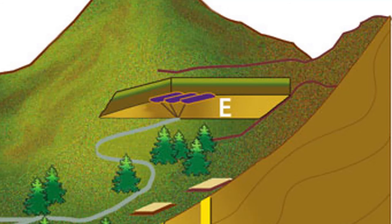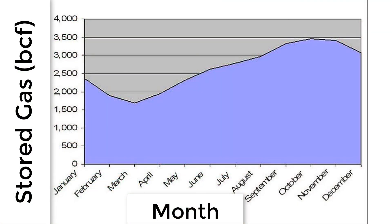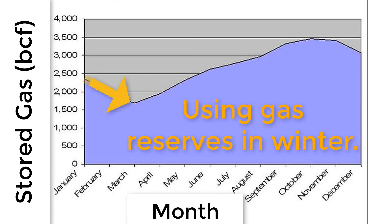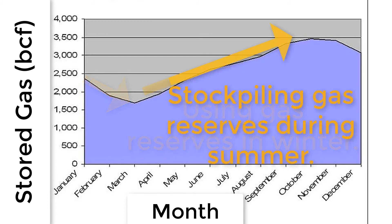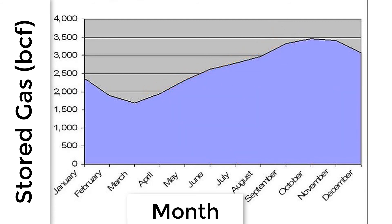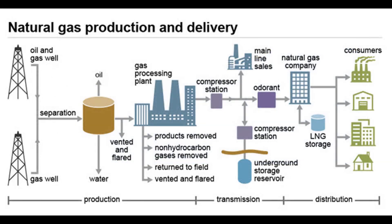But why would we actually want to store gas underground in the first place? In winter we need a lot of gas, and in summer we don't need very much at all. In winter when you're at home and a little cold, you turn the boiler on to heat your home and also need gas for heating water. In summer you don't need gas for heating because the ambient temperature is warmer, so demand in winter is very high and demand in summer is very low.